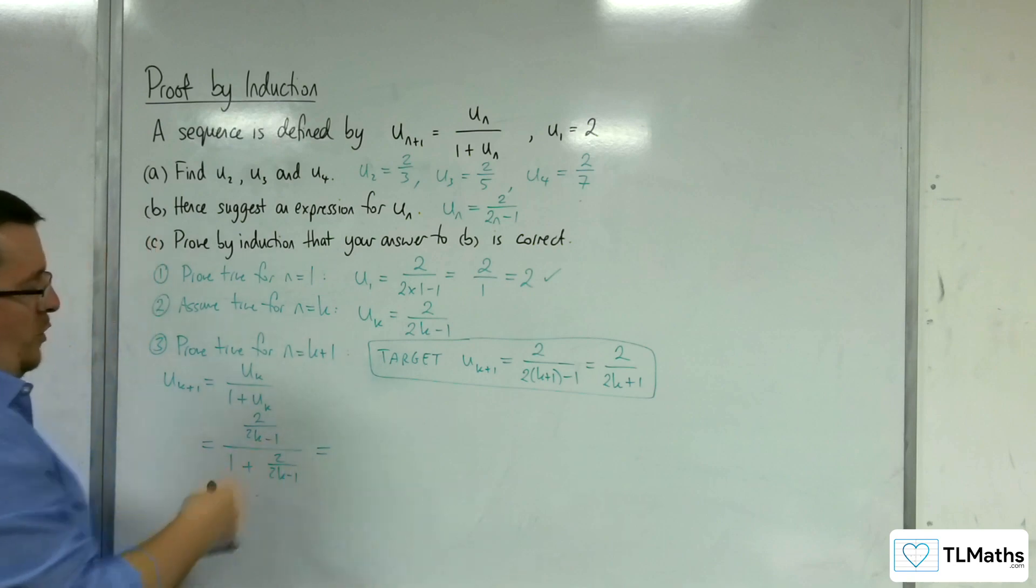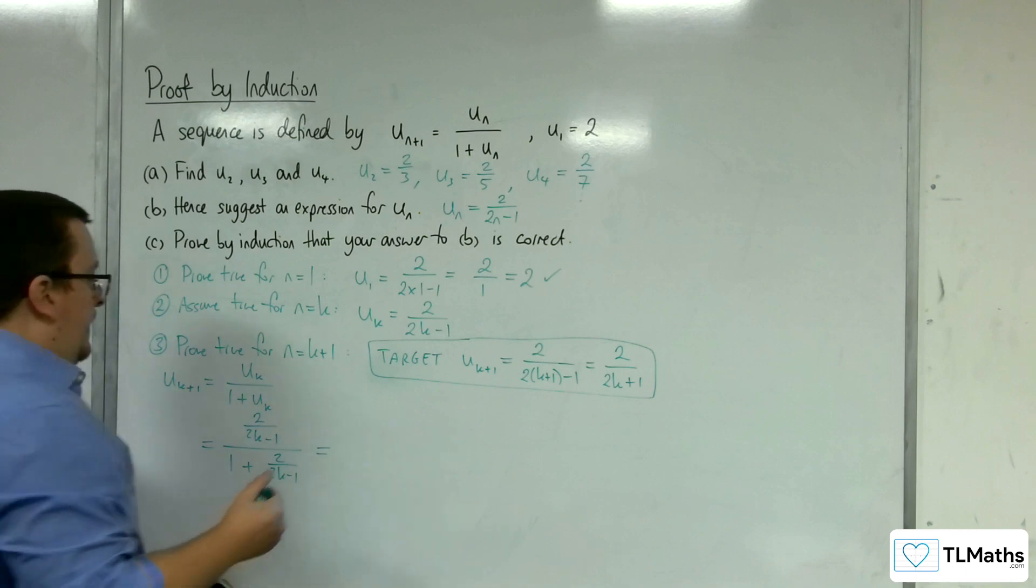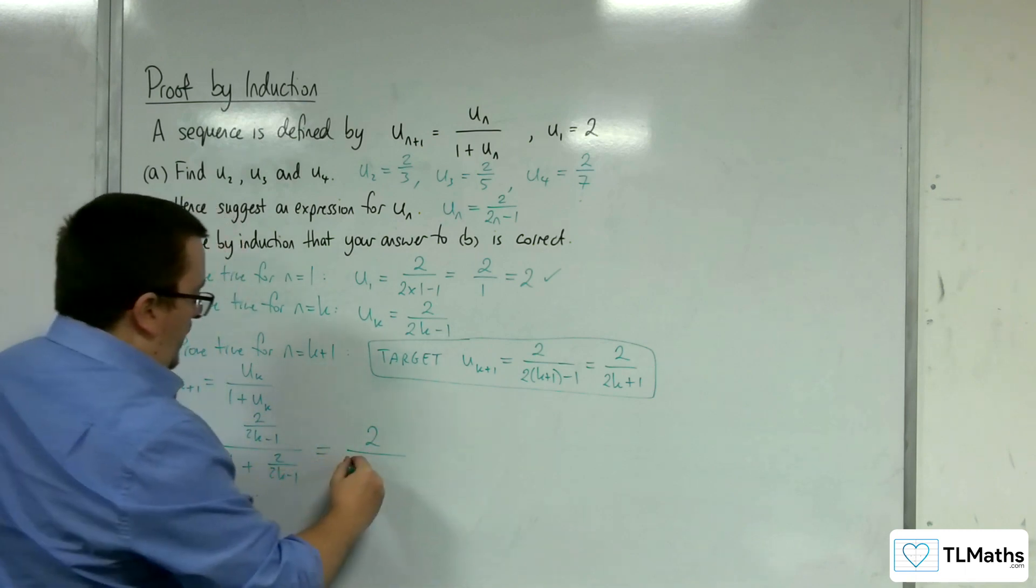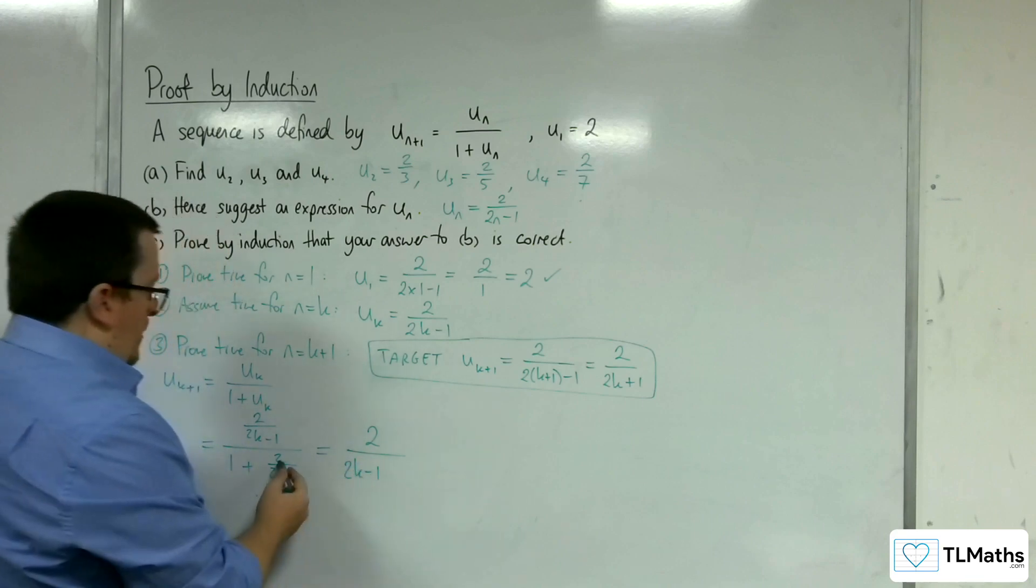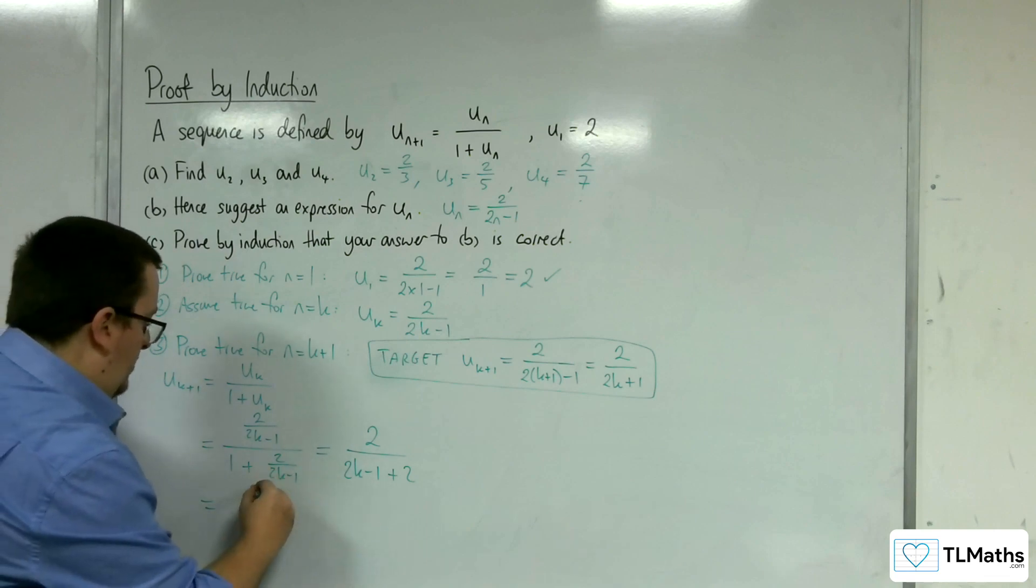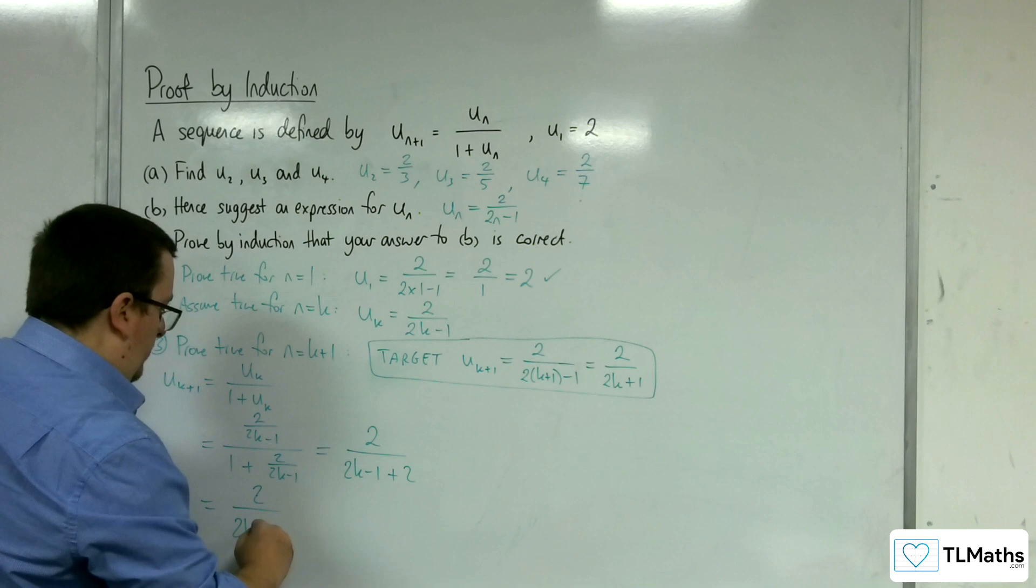Now I'm going to multiply both top and bottom of my fraction by 2k minus 1, getting rid of that denominator. So in the numerator, I just have 2. I'd have 1 lot of 2k minus 1 plus whatever's left there, 2. That gives me 2 over 2k minus 1 plus 2 is plus 1.